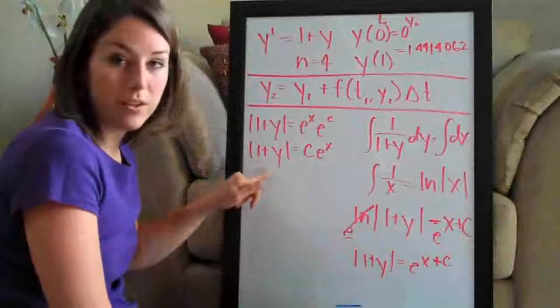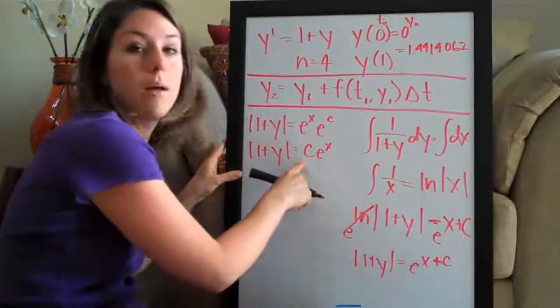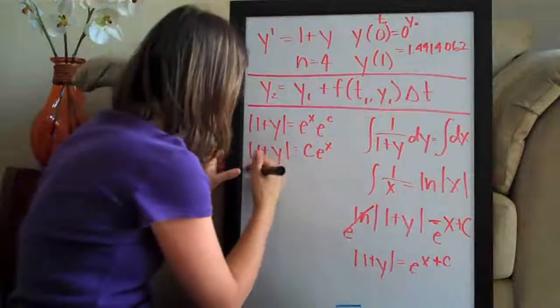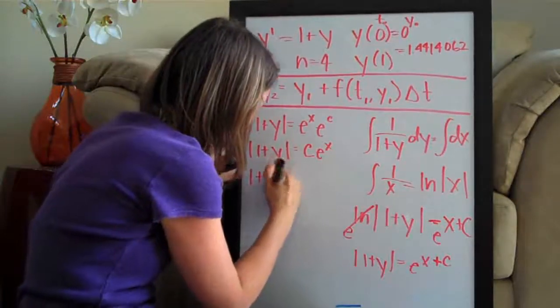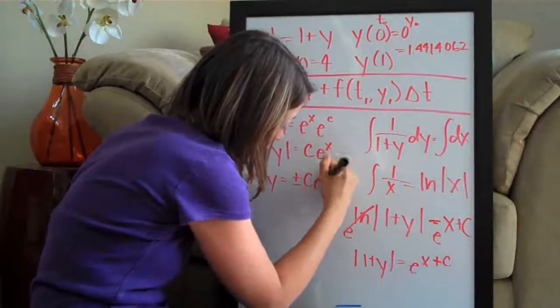The way that we take absolute value brackets away to simplify this is by adding plus or minus to the other side. So we have 1 plus y equals positive or negative c e to the x.